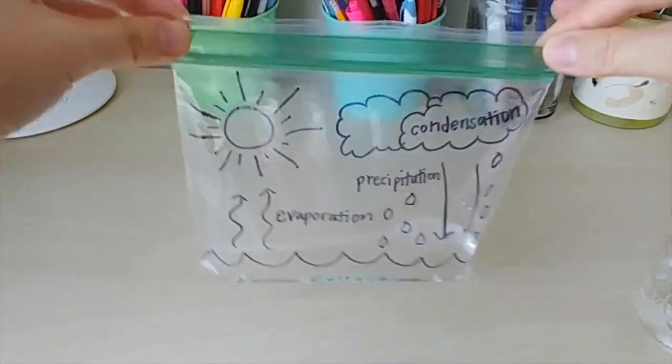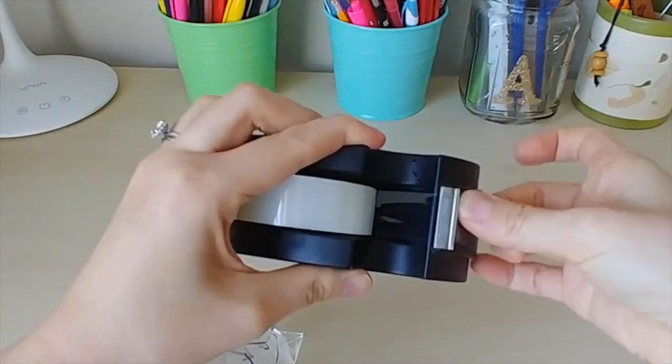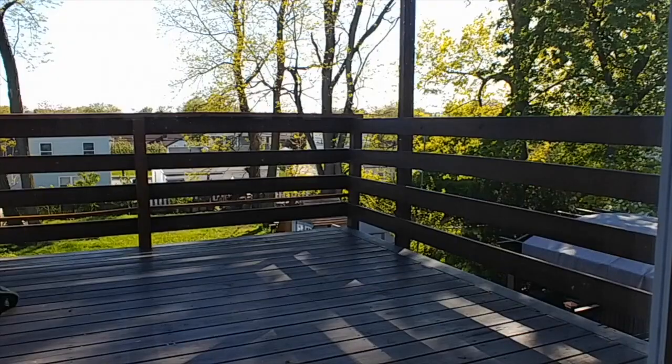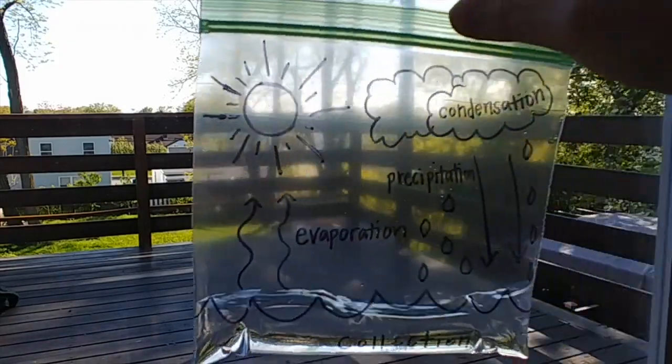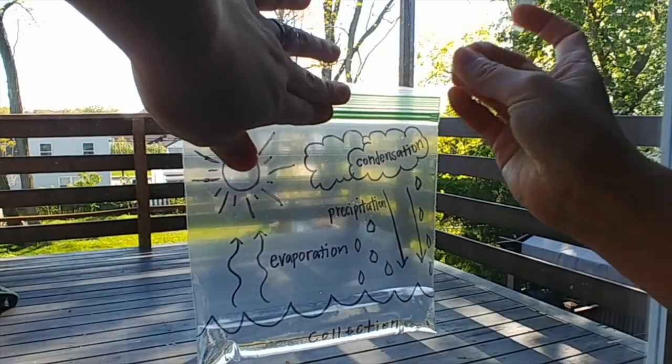Seal your bag tightly and then grab two pieces of tape or more depending on how many you will need and find a window in your home where you get a lot of sunlight throughout the day. And you're going to try your best to secure this bag on the window just like so.